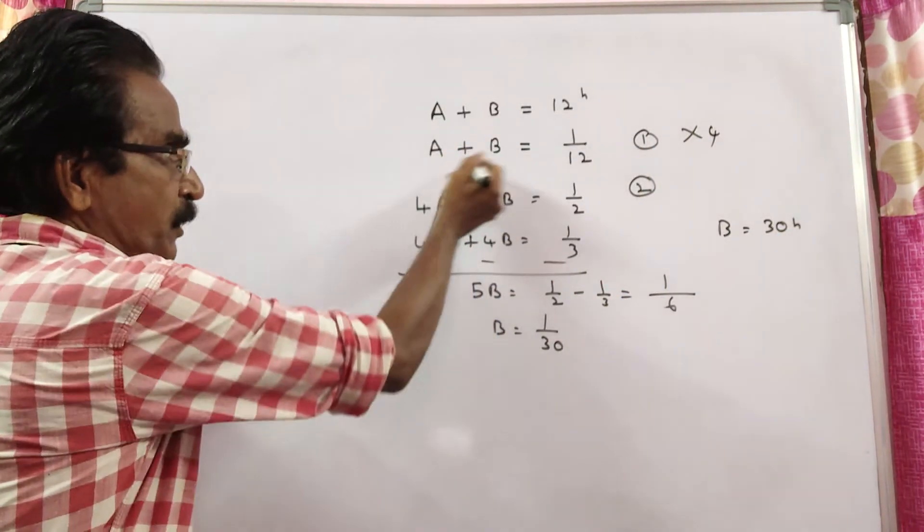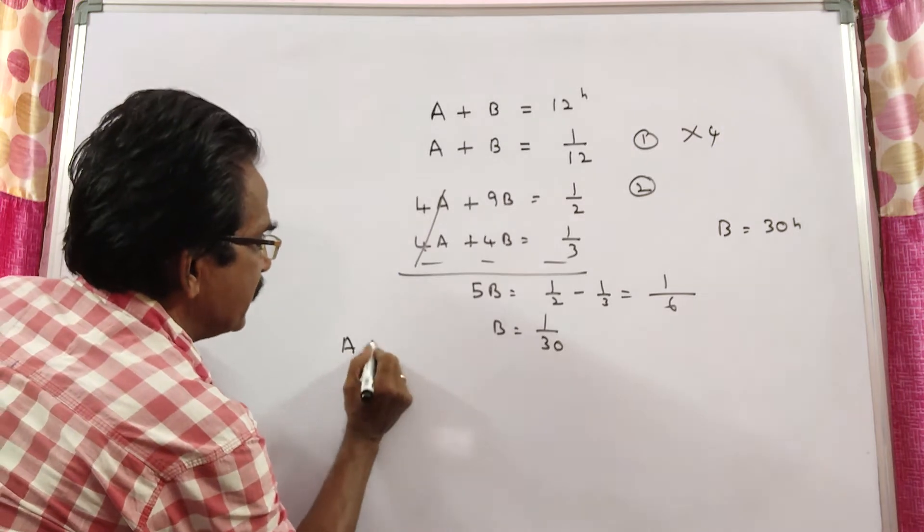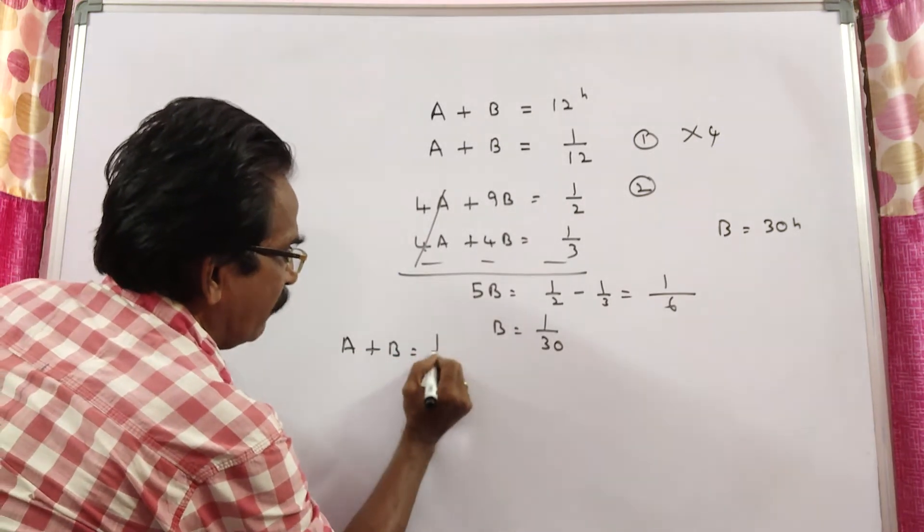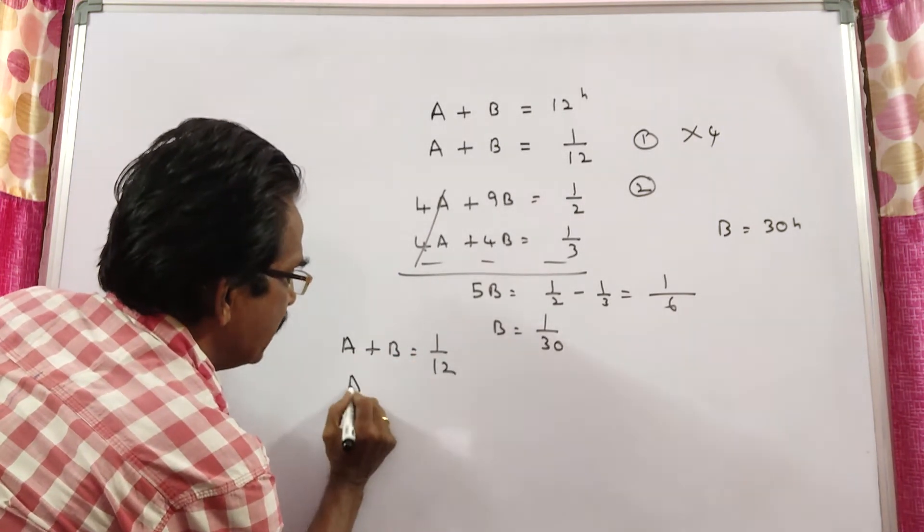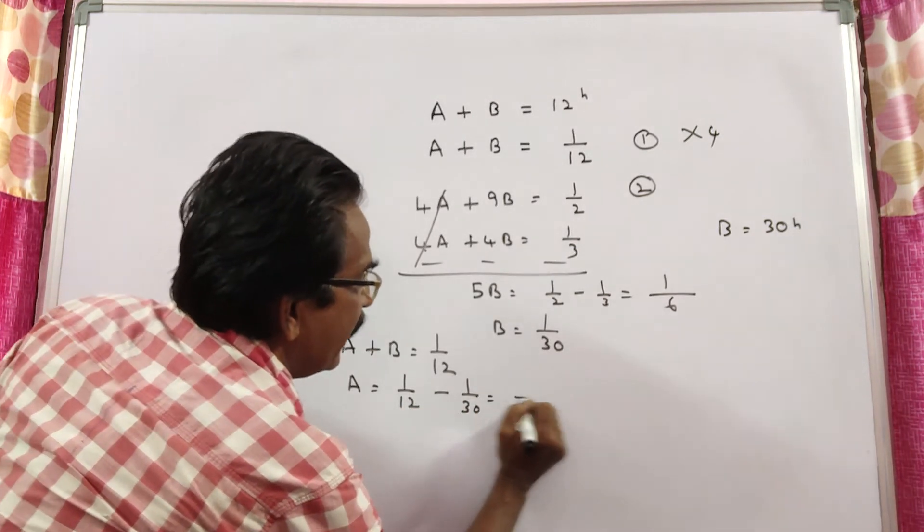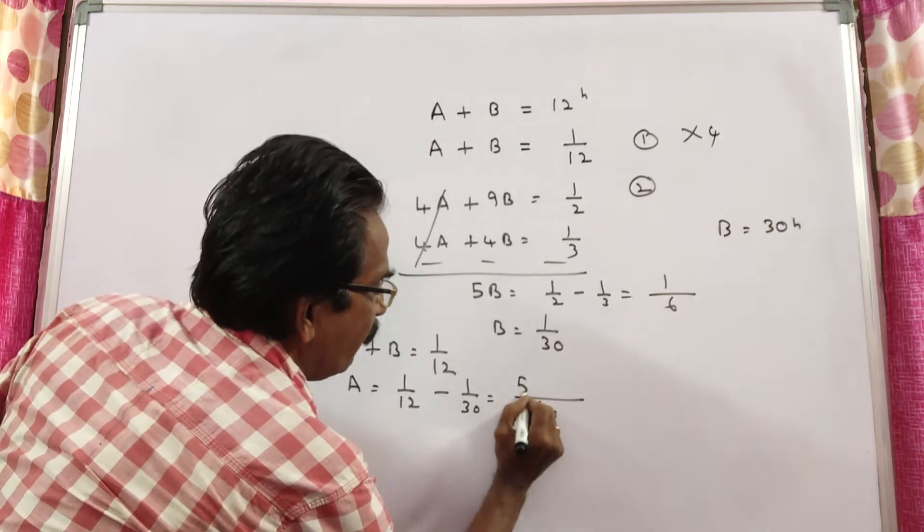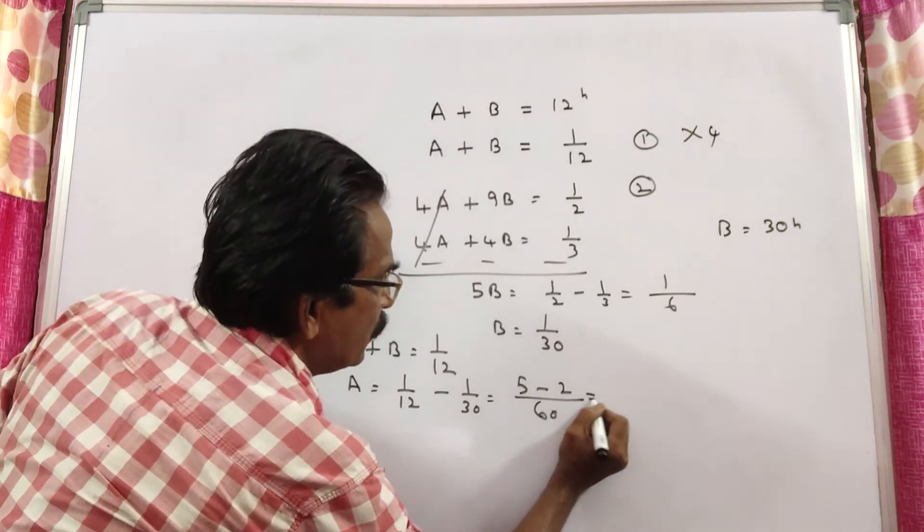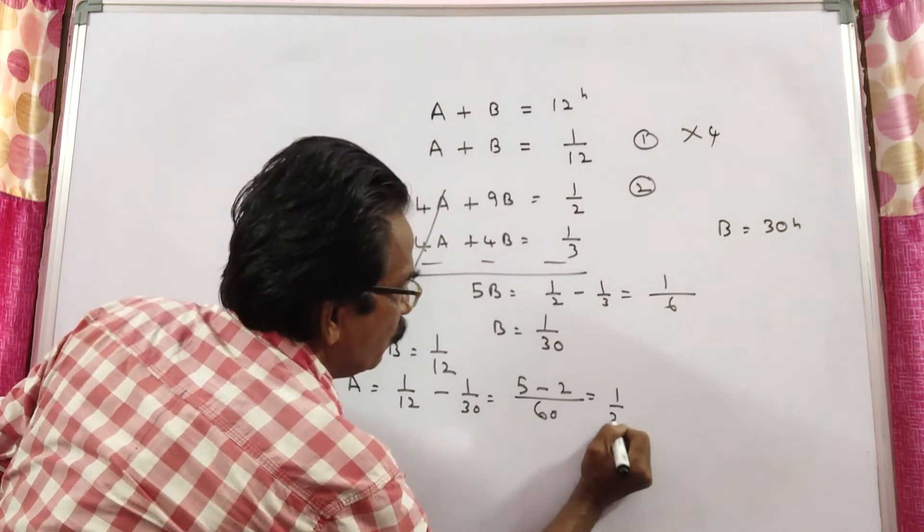Let us find A. We know A plus B is equal to 1 by 12. So A is equal to 1 by 12 minus B, that is 1 by 30. Taking LCM 60: 5 minus 2 is 3 by 60, that is equal to 1 by 20.